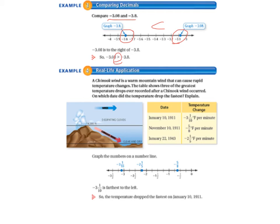A real life application is Example 4. A Chinook wind is a warm mountain wind that can cause rapid temperature changes. The table shows three of the greatest temperature drops ever recorded after a Chinook wind occurred. On which date did the temperature drop the fastest? On January 10th, 1911, there was a negative 3 and 1 tenth degrees Fahrenheit per minute temperature change. On November 10th, 1911, it was negative 5 eighths Fahrenheit per minute. On January 22nd, 1943, it was negative 2 and 1 fifth Fahrenheit per minute.